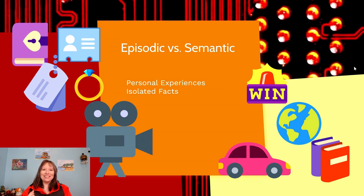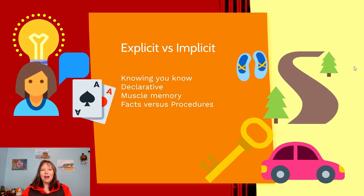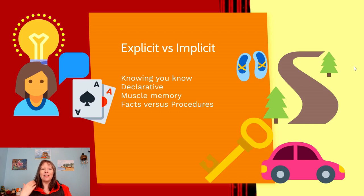For most of us, episodic and semantic memory are really entwined and work alongside each other. We only tend to see them separated if someone experiences a brain injury. Another key differentiation is explicit versus implicit memory — these words come up again and again in psychology. Explicit memory, also called declarative memory, is memory you know that you know — you can talk about it and articulate it, like recalling your address or the capital of a country.